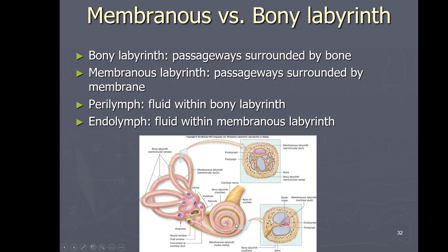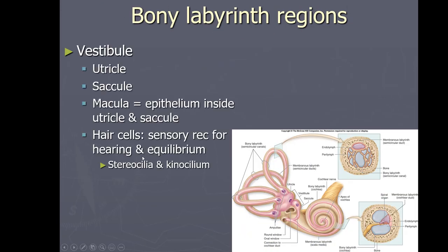Everything within the membrane is the membranous labyrinth; everything outside of that is the bony labyrinth because it's surrounded by bone. If we take a cross-section, we see areas surrounded by bone — that's the bony labyrinth — and an area in the middle surrounded only by membrane, the membranous labyrinth. The fluid also differs: within the bony labyrinth we have fluid called perilymph, and within the membranous labyrinth it's called endolymph — two distinct fluids.